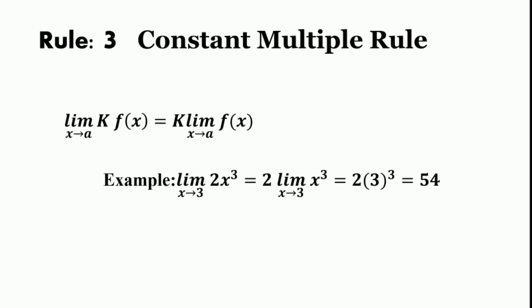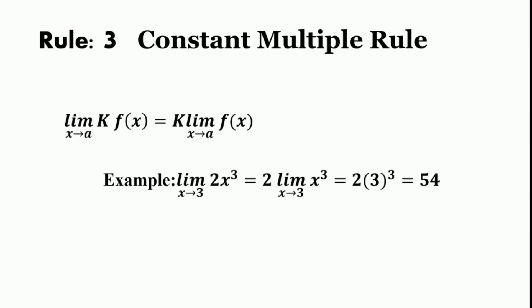The third rule is the constant multiple rule. The limit of k·f(x) as x approaches a is equal to k times the limit of f(x) as x approaches a. That means the limit of a constant times a function is equal to the product of the constant and the limit of the function. For example, the limit of 2x³ as x approaches 3 equals 2 times the limit of x³ as x approaches 3, which is 2 into 3³, equal to 54.